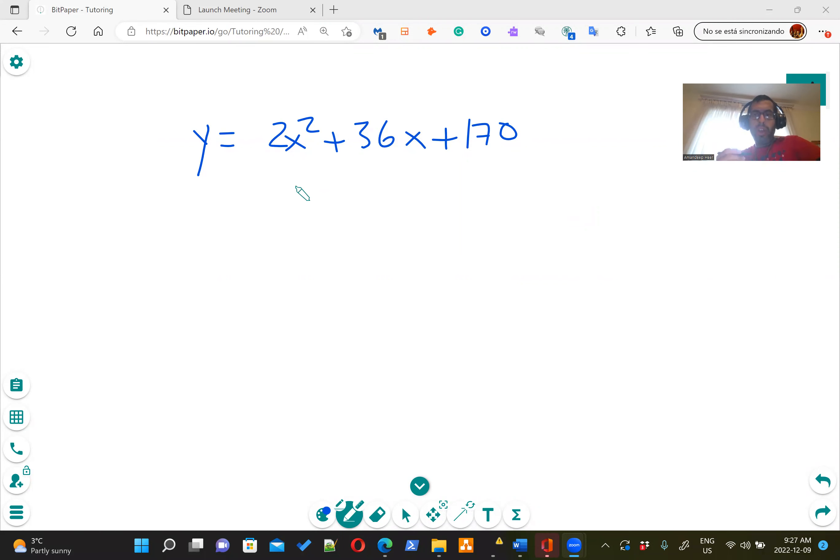So first thing you want to know, we need to identify what A, B, and C are. So here, A is 2, B is 36, and C is 190.